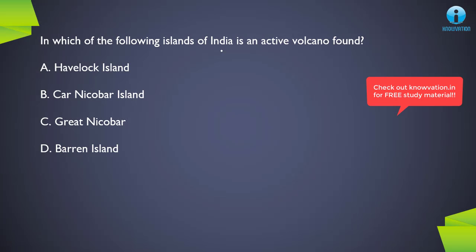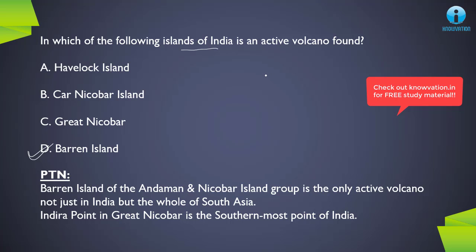Next question: in which of the following islands of India is an active volcano found? The correct answer is B, Barren Island. Barren Island is part of the Andaman and Nicobar Islands. Very importantly, it is not just the only active volcano in India, but also in the whole of South Asia. Additionally, Indra Point in Great Nicobar is the southernmost point of India — so please note both facts: Barren Island has the only active volcano in South Asia, and Indra Point is India's southernmost point.